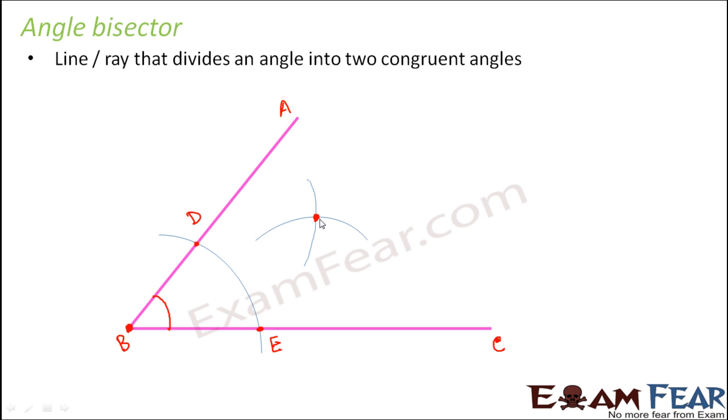Now what you have to do? Join B with this point of intersection like this. So what is this green line you see? This is nothing but the angle bisector.